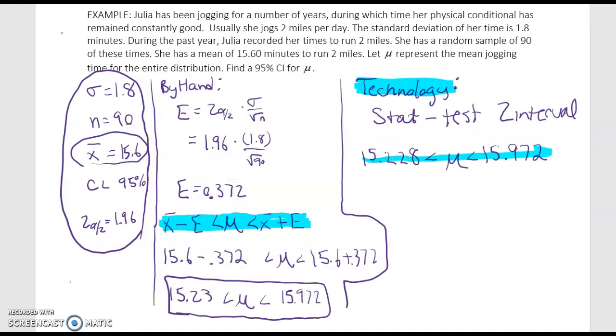You'll see here that we got pretty much the same answer. We have 15.228 as opposed to 15.23 but if you rounded those both to the nearest hundredth they'd be the same. We had to do some rounding in the middle of our problem when we did it by hand and that's why we're off slightly so that's due to human error.